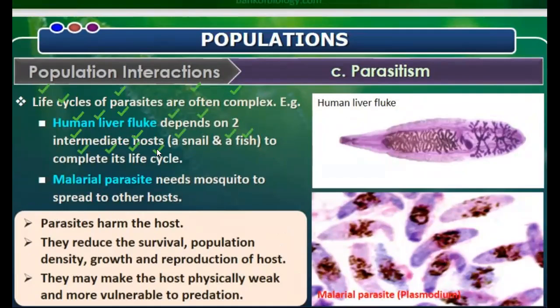The human liver fluke having two hosts is a very important question. The malarial parasite also has two hosts. The malarial parasite needs a mosquito to spread to its other host. So these parasites also have two hosts.